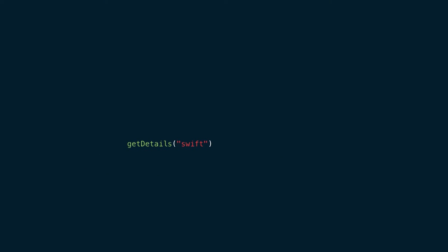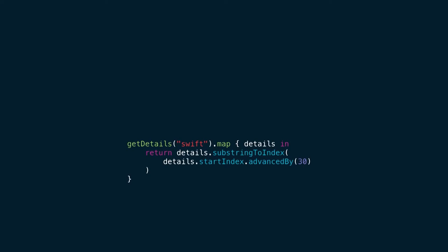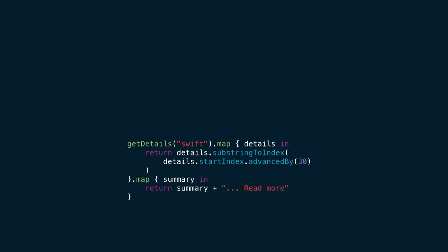So let's dive into getDetails. Say we want to display just the first 30 characters of the details and then a 'read more' call to action for the user. What we can do is use map, which transforms the future into a new future. We're mapping the future that contains the whole detail string into a future that only contains the first 30 characters of that string. And then we add a second map that will append '...read more'. The result is a future string.